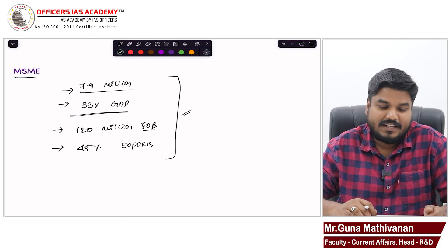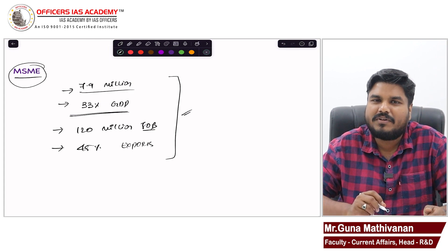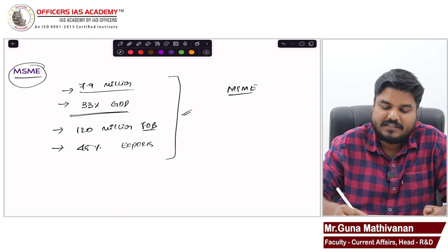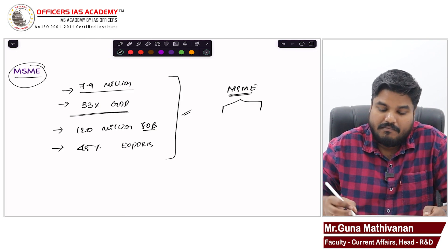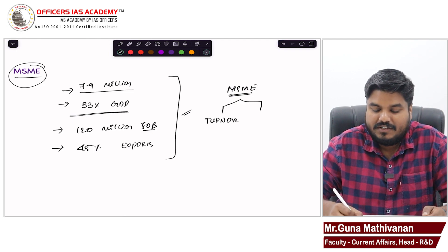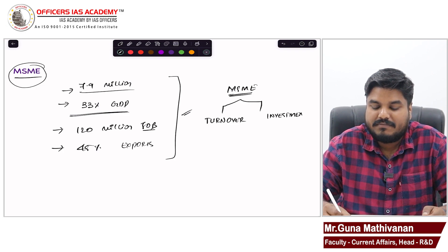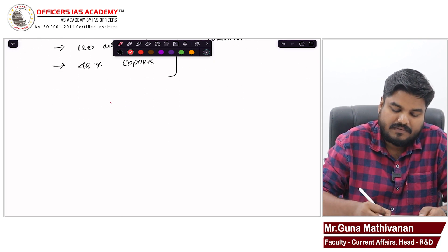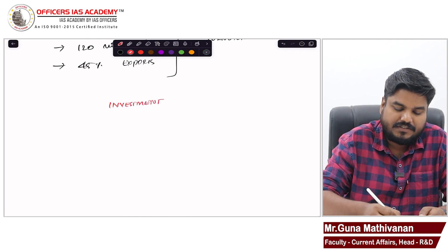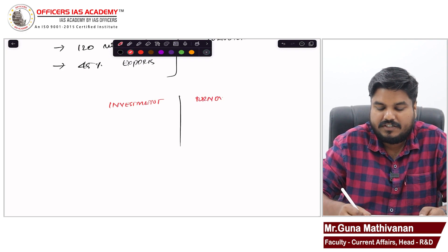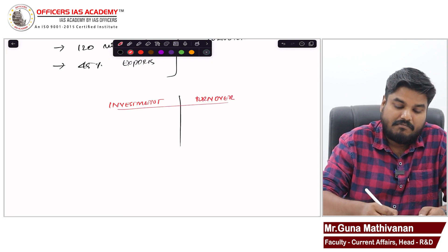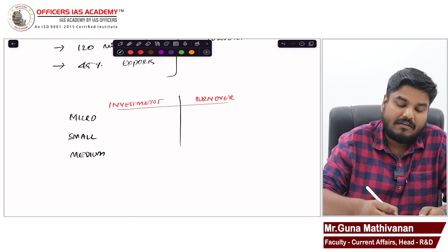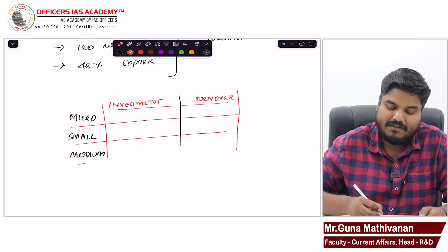Now, how is MSME classified? We often use this term MSME, but we don't always have a proper idea of how it is classified. Micro, Small, Medium Enterprise is classified based on two criteria: investment and turnover. Based on investment and turnover, we classify Micro, Small, and Medium Enterprises.